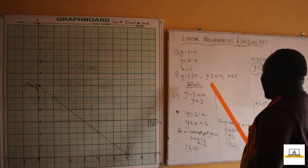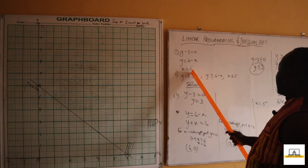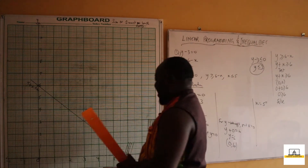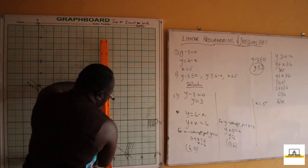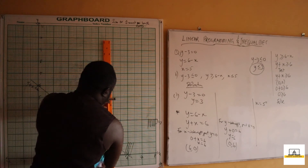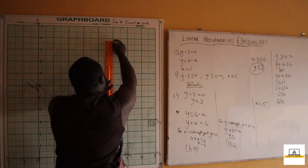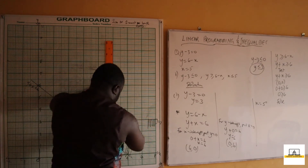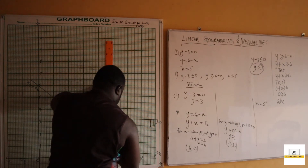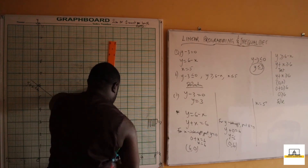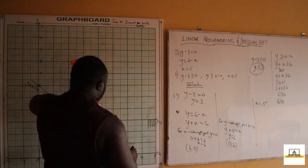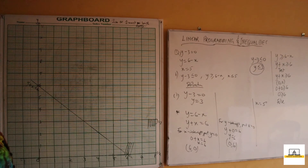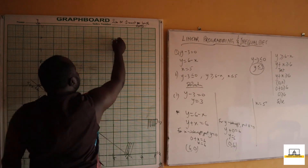The last line to draw is x equals 5. We locate 5 on the x-axis and draw a vertical line through it. So this is our line x equals 5.